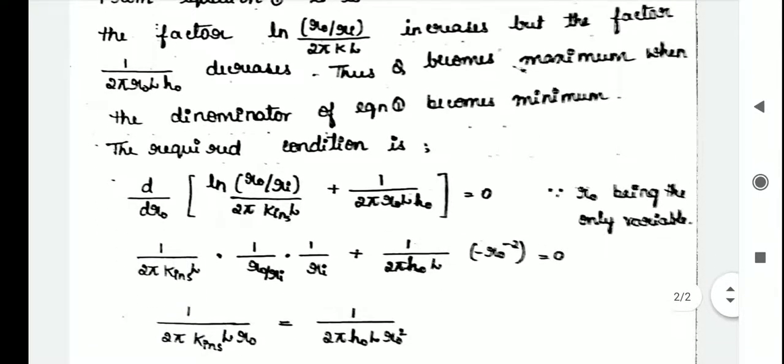The required condition is d by dR of log of R0 divided by Ri upon 2pi K insulated into L plus 1 divided by 2pi R0 into L into H0 which equals 0. Because R0 is the only variable.